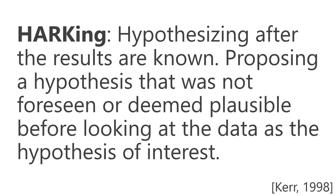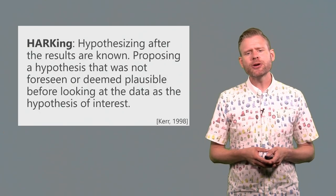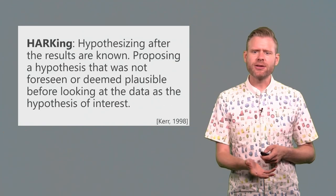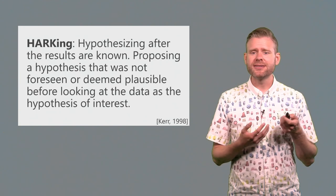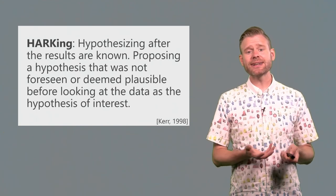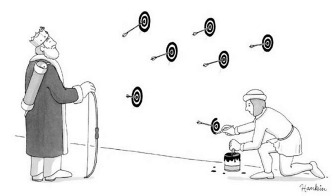Another source of possible bias is known as hypothesizing after the results are known. Instead of actually testing a prediction and controlling the error rates that come with the statistical test, people can look at all the statistical results in their output and generate a hypothesis based on whatever finding was statistically significant, which can greatly inflate the type 1 error rate. Now, I like this cartoon because it sort of looks like the professor is doing all the shooting and then the poor PhD student actually has to fix everything after the fact.